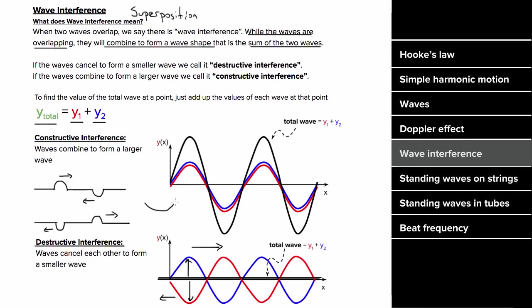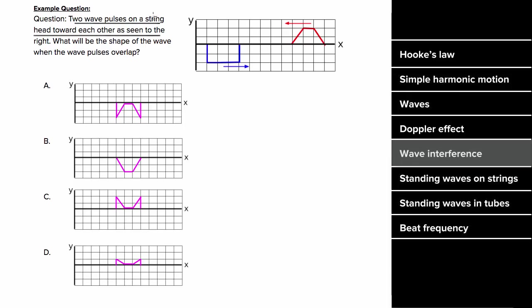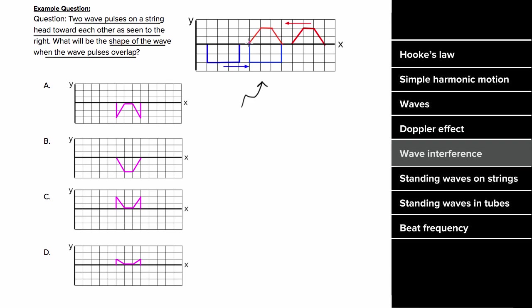Here's a wave interference example. Two wave pulses on a string head toward each other. To find the total wave shape when they overlap, we add up the values of each individual wave. Zero of the red wave plus negative two units of the blue wave equals negative two units total. Positive two units of the red plus negative two units of the blue equals zero. The result is that the pyramid-shaped pulse takes a bite out of the blue rectangular wave.